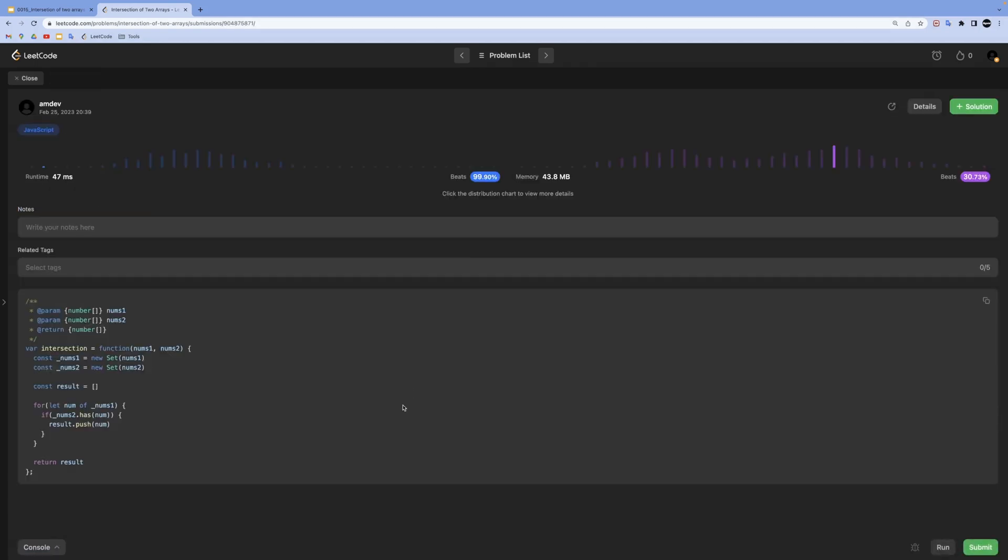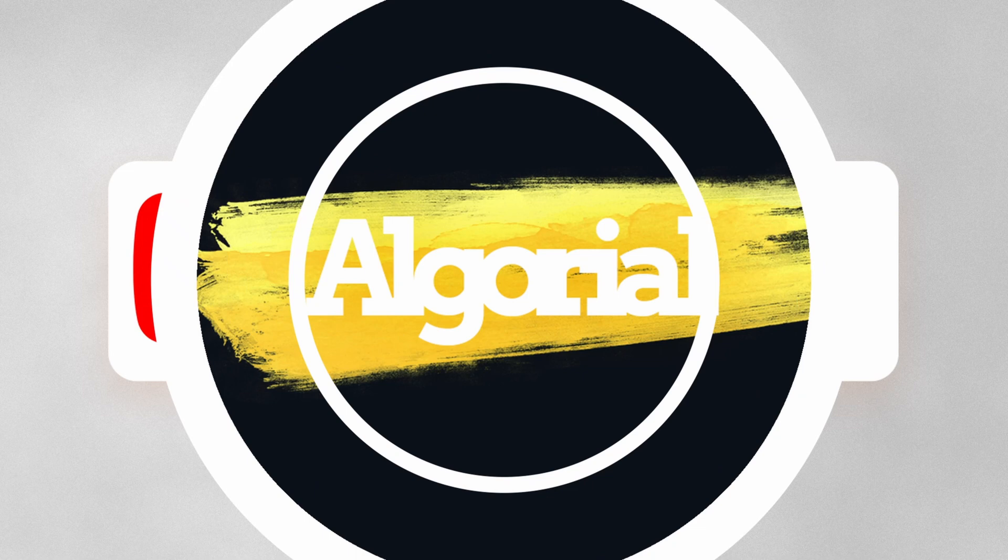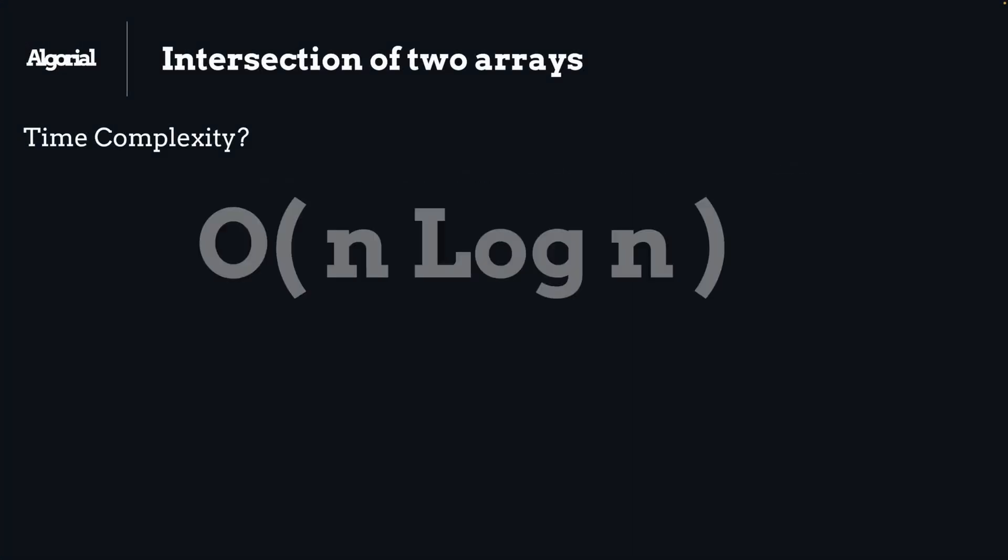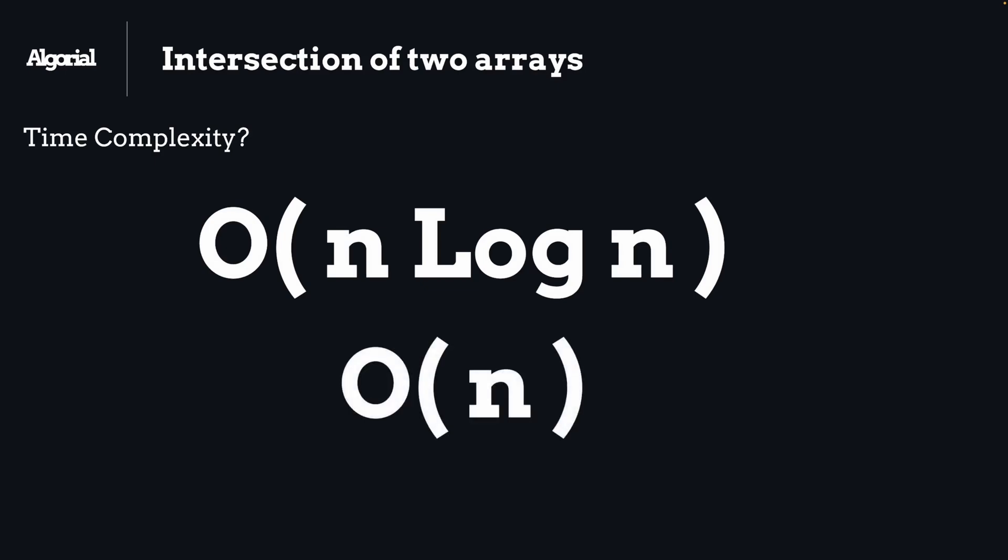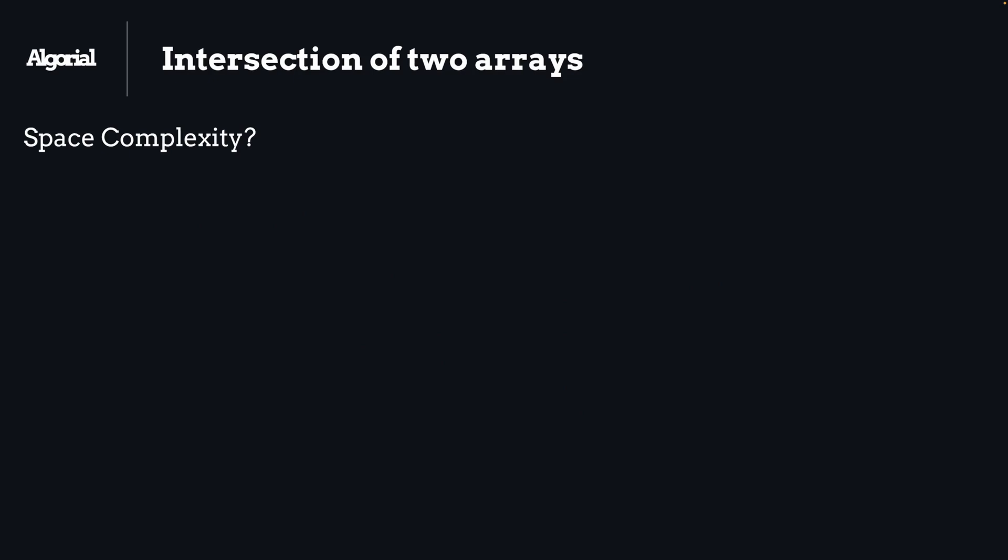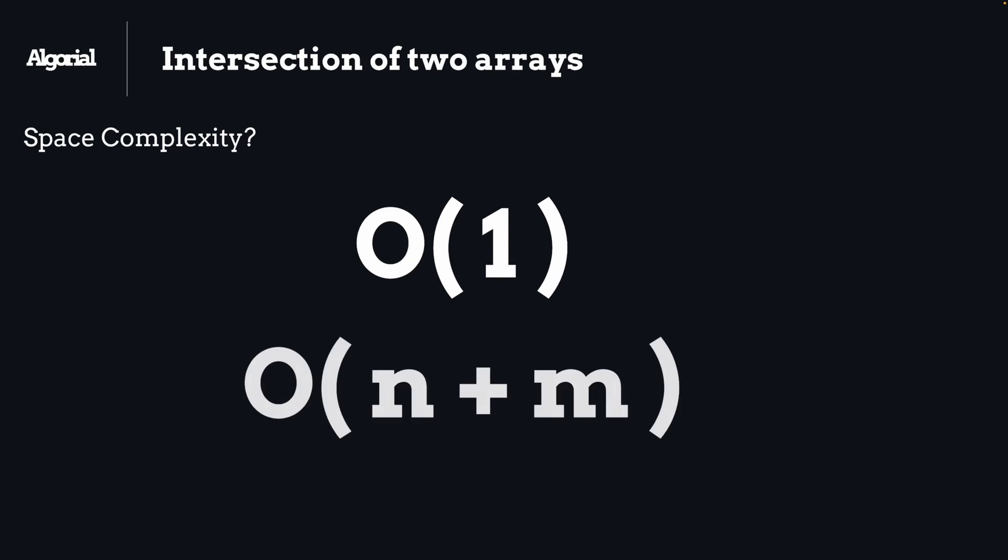Now let's jump back into slides for time and space complexity analysis. For time complexity we will have O(n log n) for sorting solution just because of sorting itself, and we will have O(n) time complexity for our solution with set. For space complexity, sorting solution will have O(1) constant space complexity, but for set solution we will have O(n + m) space complexity where n is the length of our unified first array and m is the same for the second array.